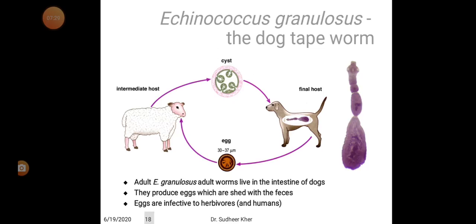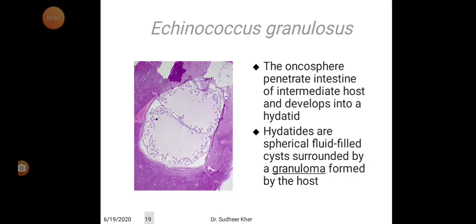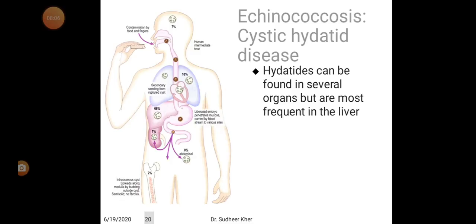Adult Echinococcus granulosus worms live in the intestine of dogs. They produce eggs which are shed with the feces. Eggs infect herbivores and humans accidentally. The oncospheres penetrate the intestine of the intermediate host and develop into a hydatid. Oncospheres develop into hydatid cysts, which are spherical, fluid-filled cysts surrounded by a granuloma formed by the host. The hydatid cyst consists of two layers: the exo and endo, with a middle laminar layer.